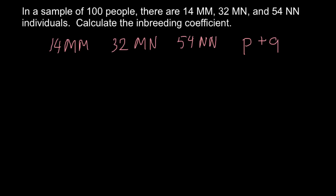We can abbreviate the alleles as P and Q, where P stands for allele M and Q stands for allele N. The frequencies of P and Q when added together equal 1, or 100%. So one scale runs from 0 to 1, and another runs from 0% to 100%, where 1 equals 100% and 0.5 equals 50%.